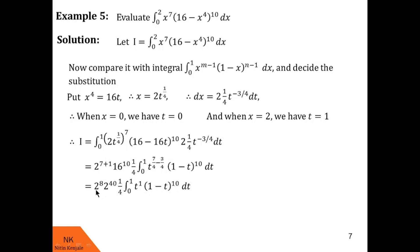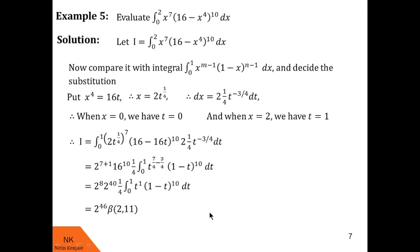The outside constants simplify to 2 raised to 8 into 2 raised to 4 times 16 raised to 10 into 1 by 4. Comparing the integral with the definition of beta of m comma n, we get m equal to 2 and n equal to 11. So this integral can now be written as beta of 2 comma 11 multiplied by the constant terms.